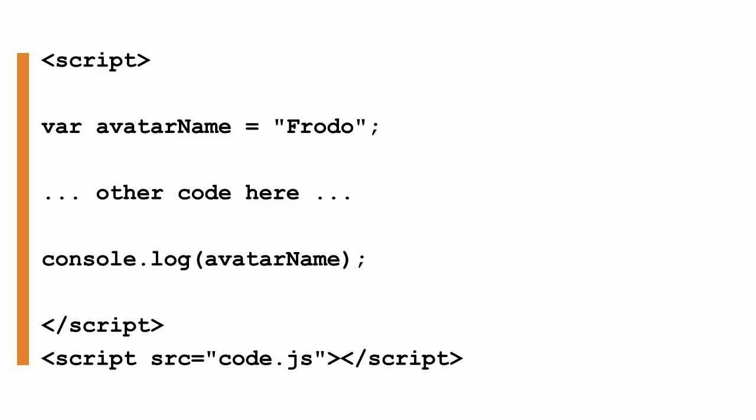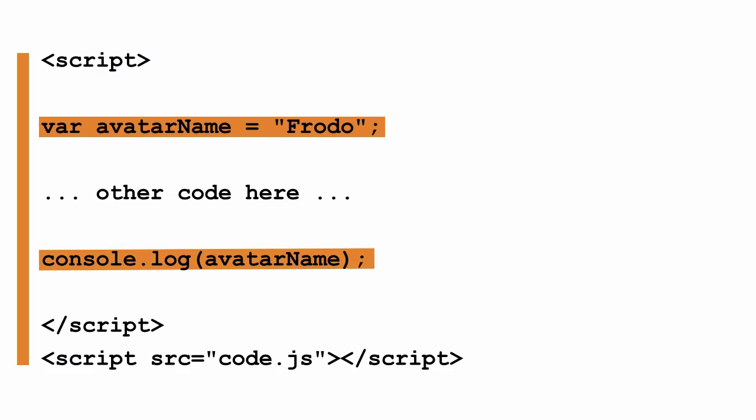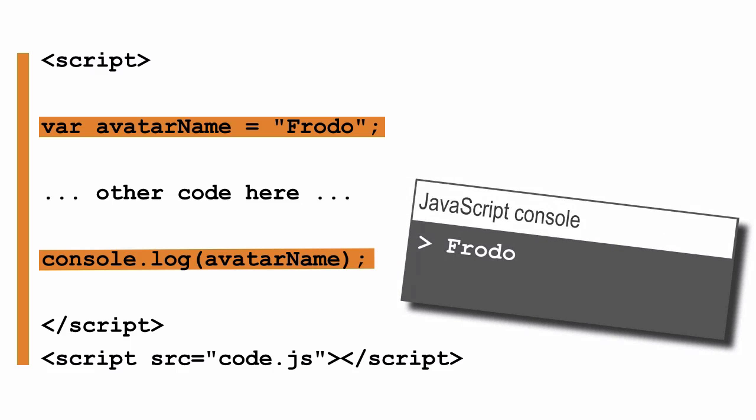And that includes any code you link to as well. Notice that in this code, we've declared and initialized the variable avatar name at the very top of our code, and then we're referencing the variable below to display the value in the console. This seems logical — we declare our variable before we use it, and our code works just fine. When we run it, we see the value of the variable in the console.